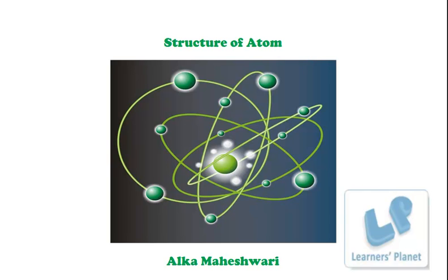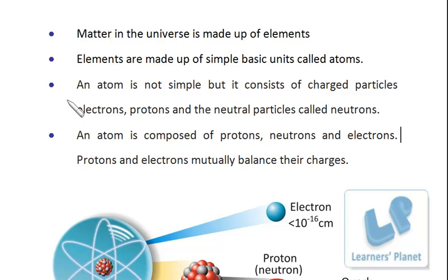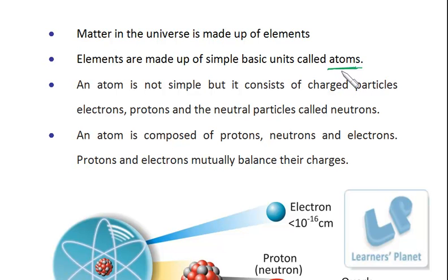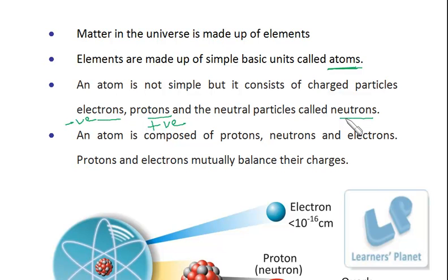Let's begin the session. I have mentioned the important points here. First, matter in the universe is made up of elements, and elements are made up of a simple basic unit — that is the atom. In an atom we have charged particles like electrons and protons, and neutral particles called neutrons. Protons are positively charged, electrons are negatively charged, and neutrons have no charge.